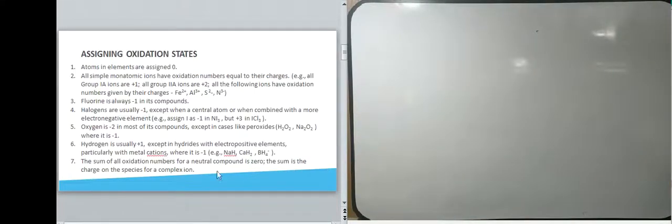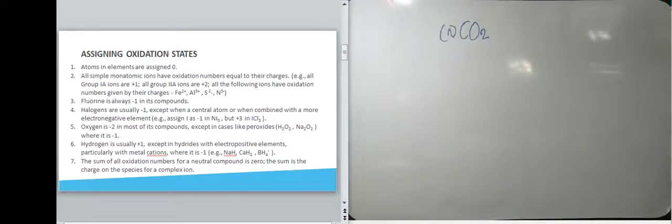Okay, so we should first try to review on how to assign oxidation. So we have here an example, carbon dioxide. And from the rules on assigning oxidation states based on number 5, oxygen is negative 2 in most of its compounds except in cases like peroxide, where it is negative 1.